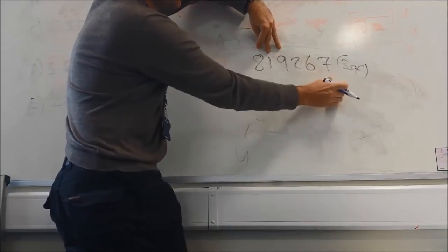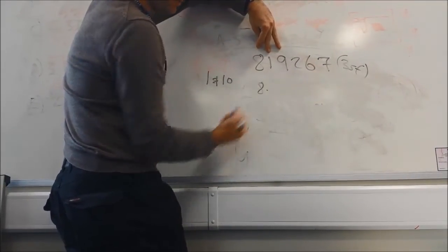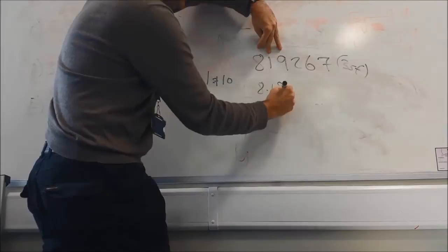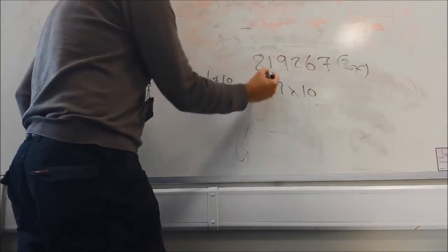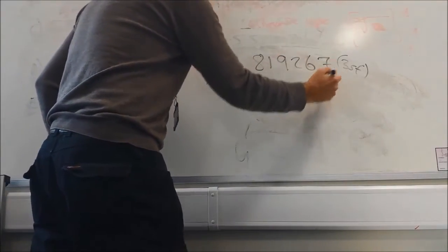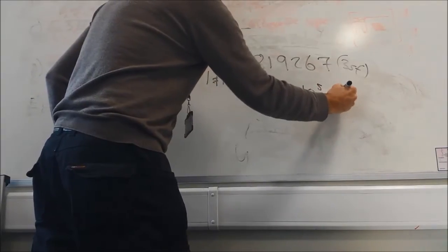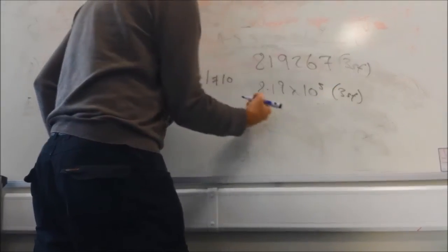So those three numbers are going to disappear. The two will have no effect on the nine. So it's going to be 8.19 times 10 to the power, and it's the same, 1, 2, 3, 4, 5. So that's rounded to three significant figures in standard form.